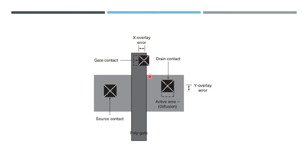Similarly, you can see this diffusion region or active area where we have an overlay error in the Y direction — this is the value of that overlay error. This via was supposed to be in the region where the dotted region is shown.